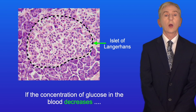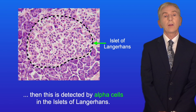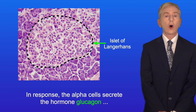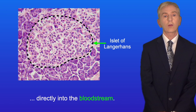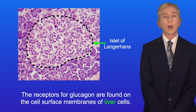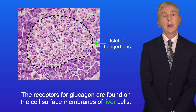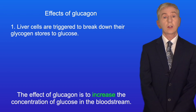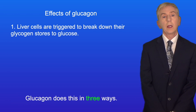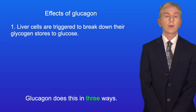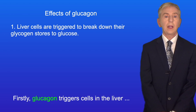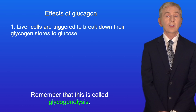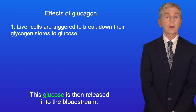If the concentration of glucose in the blood decreases, this is detected by alpha cells in the islets of Langerhans, and in response the alpha cells secrete the hormone glucagon directly into the bloodstream. The receptors for glucagon are found on the cell surface membranes of liver cells, so liver cells are the target cells for glucagon. The effect of glucagon is to increase the concentration of glucose in the bloodstream, and it does this in three ways. Firstly, glucagon triggers cells in the liver to break down their glycogen stores to glucose — this is called glycogenolysis — and this glucose is then released into the bloodstream.